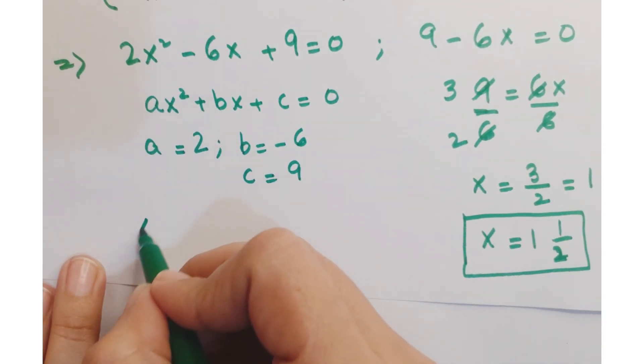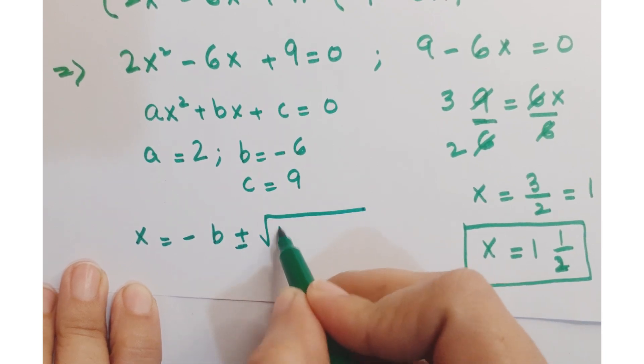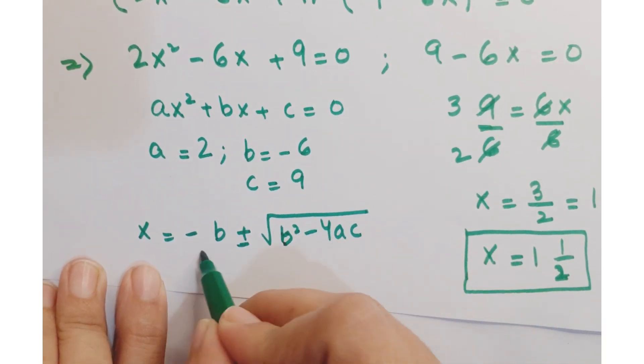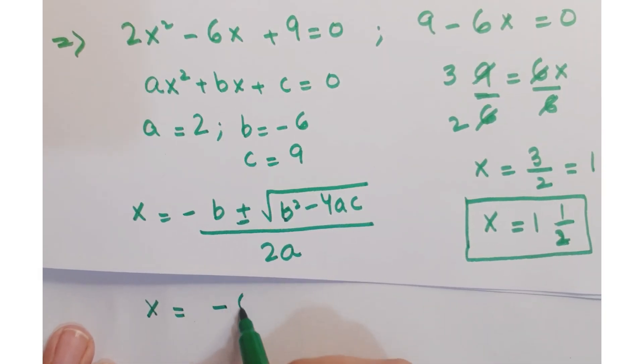Putting the values in the quadratic formula that is x is equal to minus b plus minus under root b square minus 4ac upon 2a.